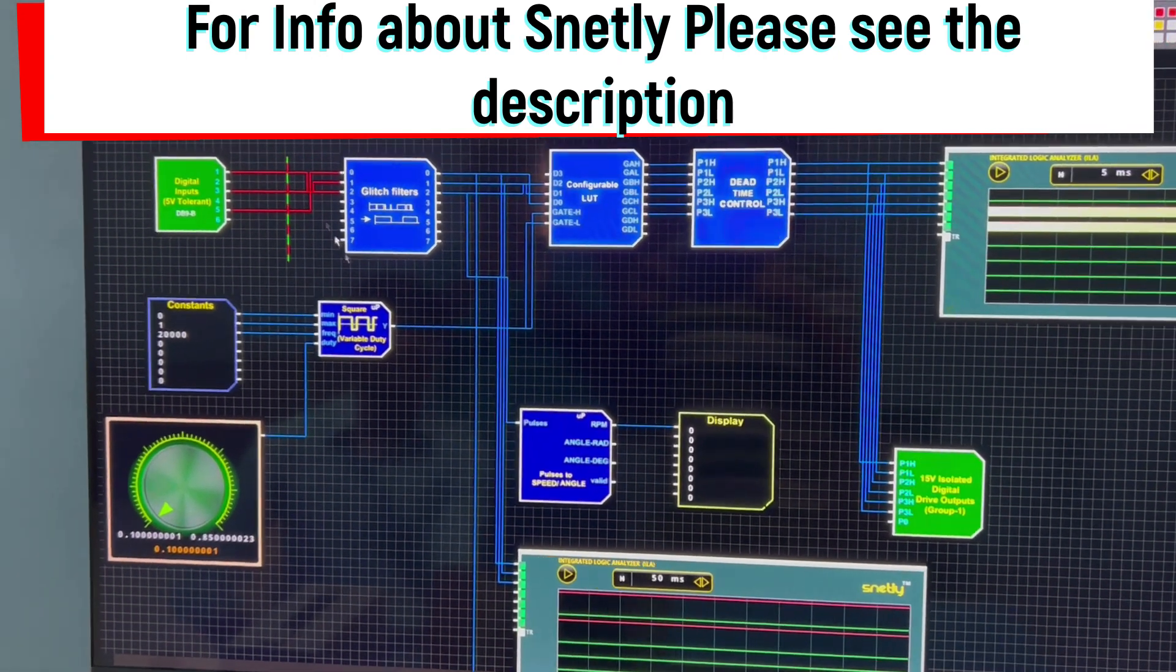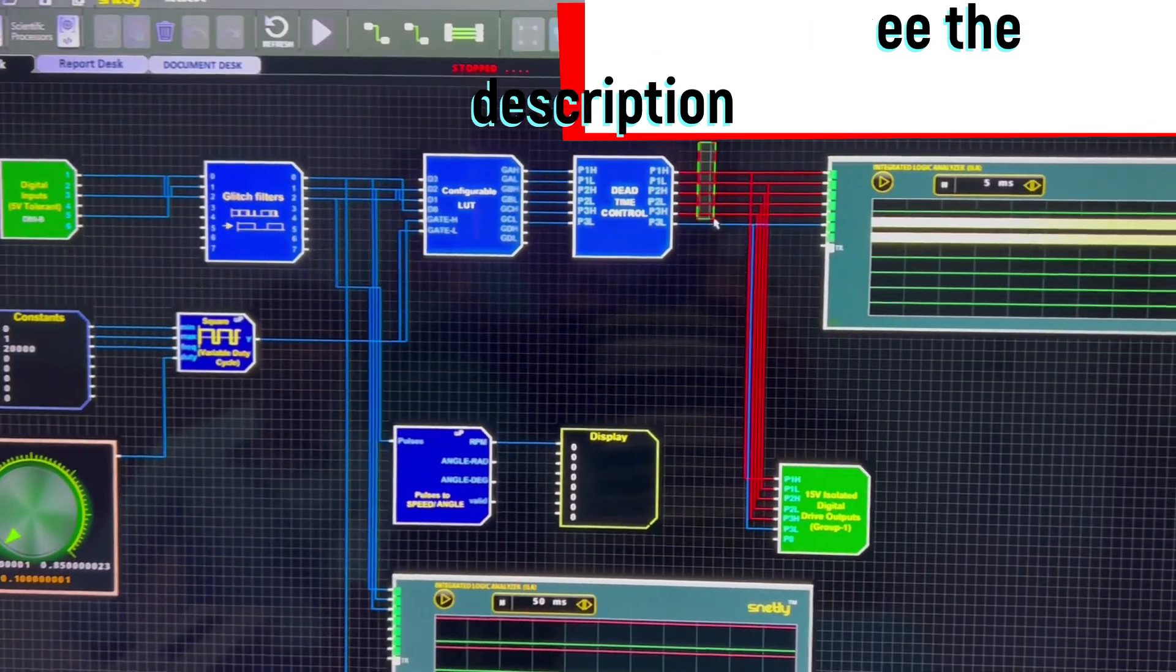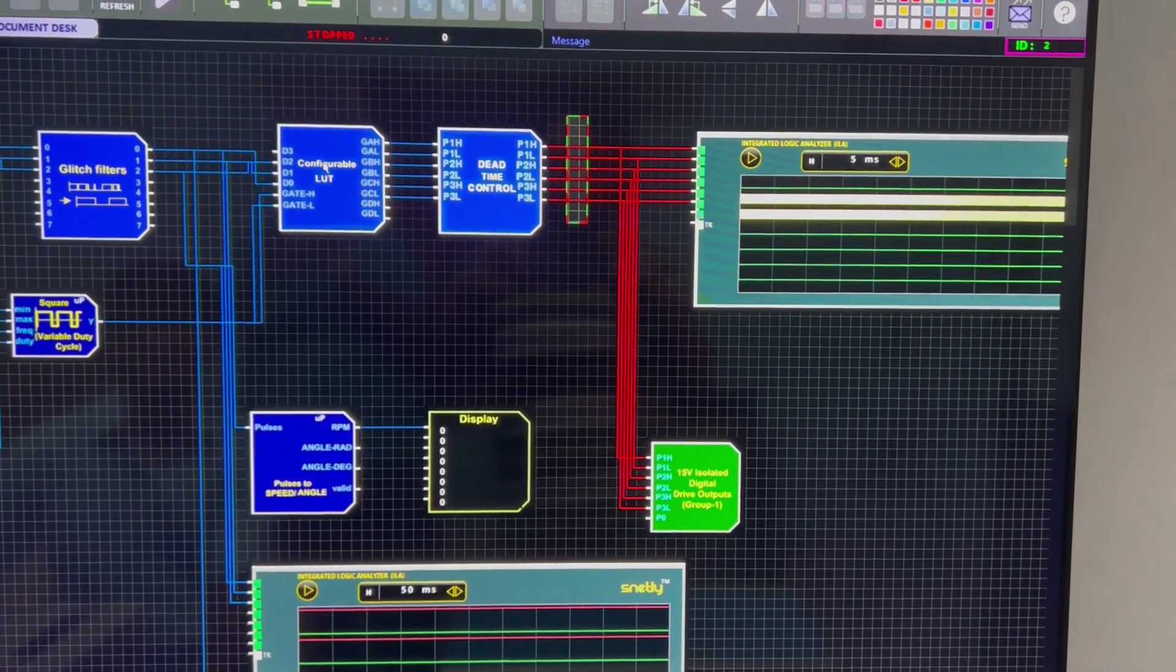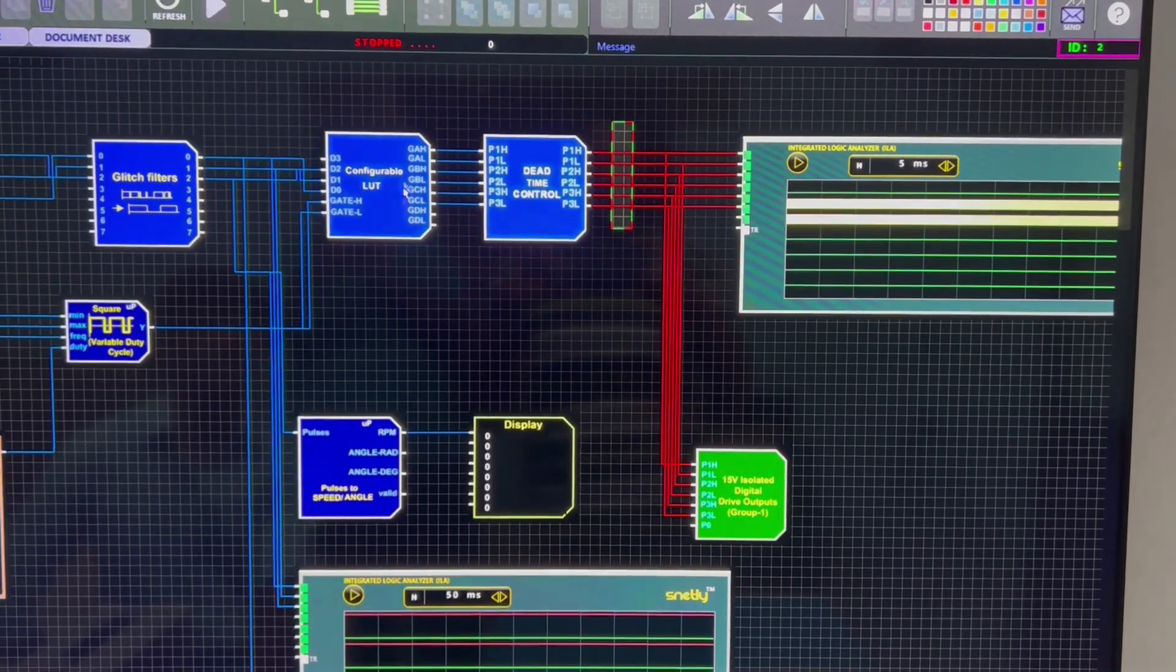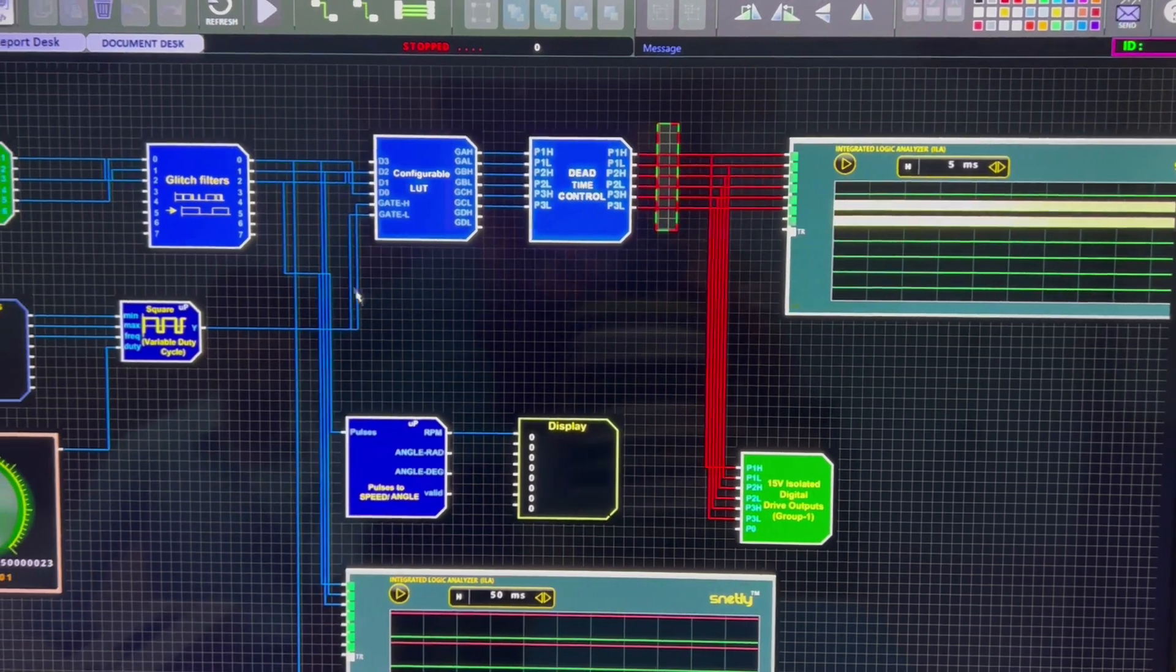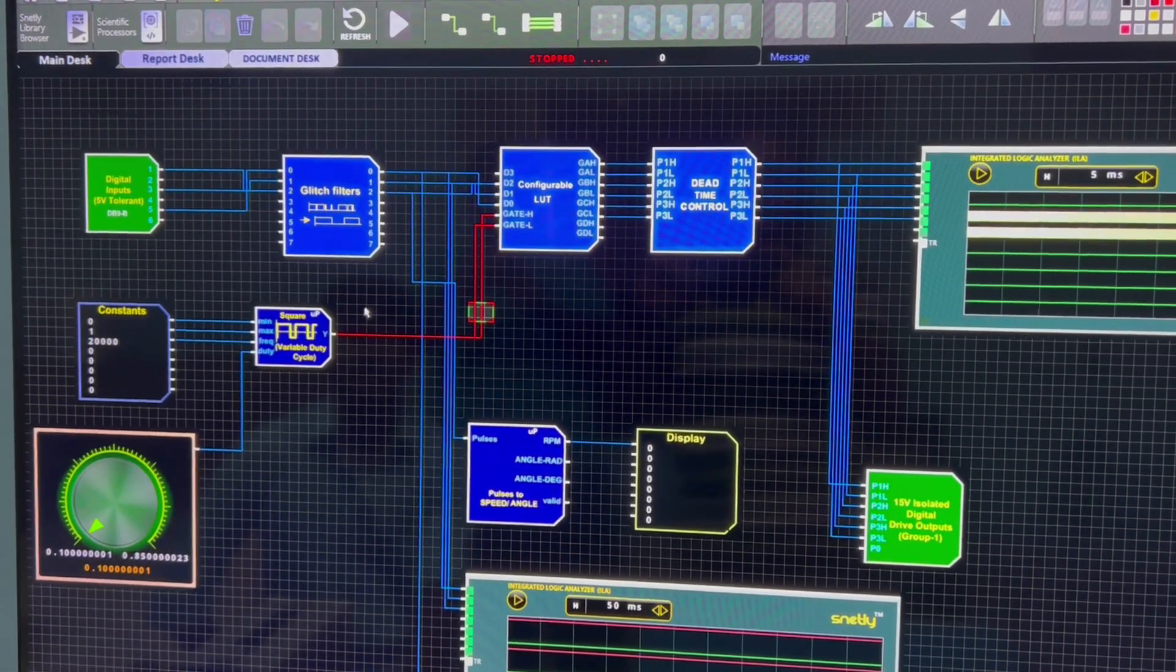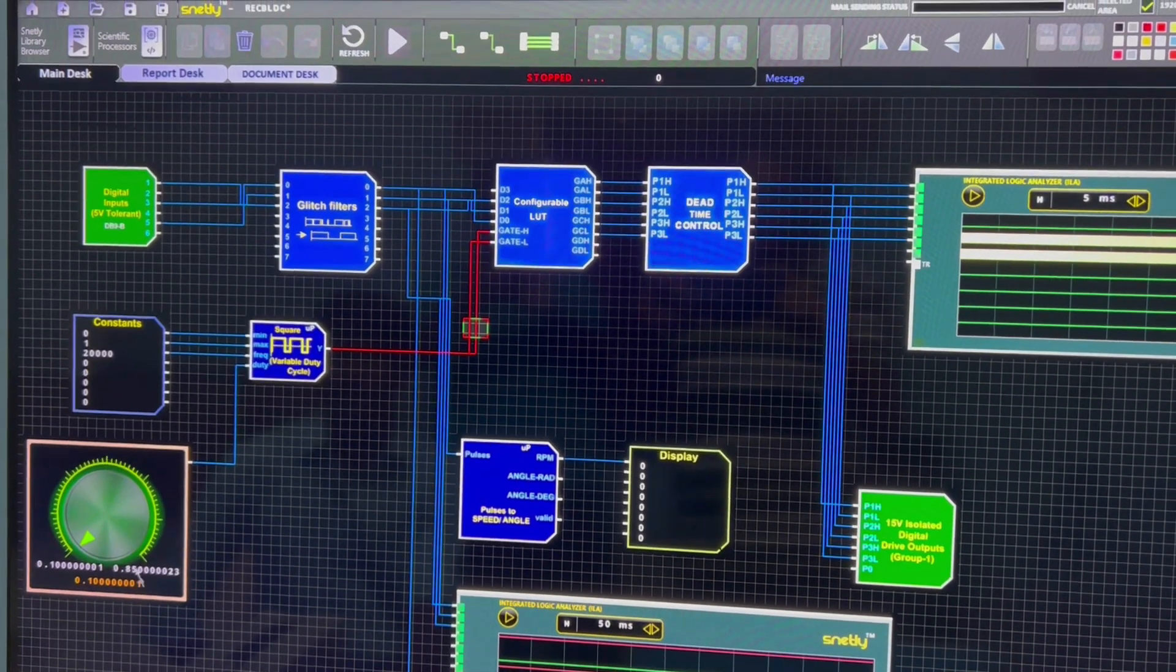Based on the sensor feedback, we need to configure the gate signal of the voltage source inverter module. Here we are using a configurable lookup table to configure the gate signal. For a gate signal, top and bottom of each leg, we are dealing simple square pulse with a variable duty control.